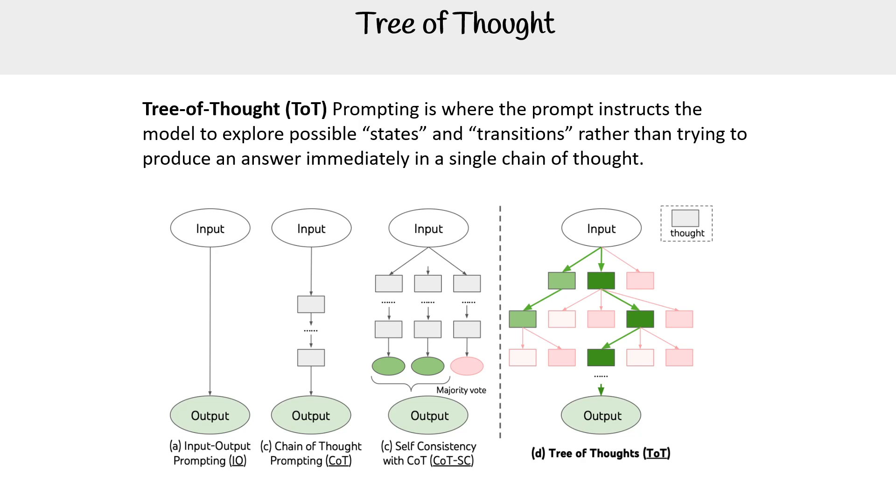Then we have self-consistency with chain of thought. This is where it produces multiple things and uses voting to come to a final result. I don't think we made a slide on this, but it is another thing that we can do.